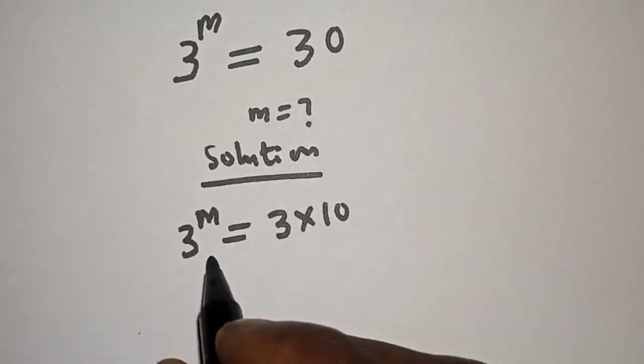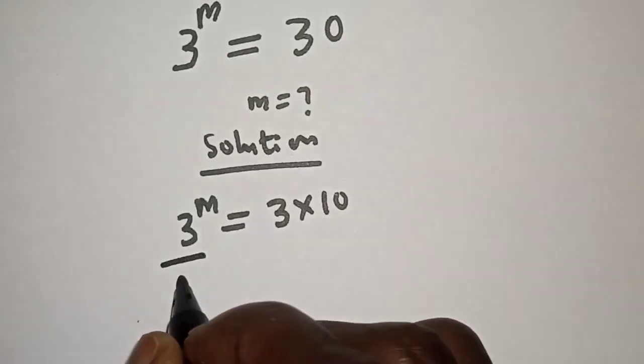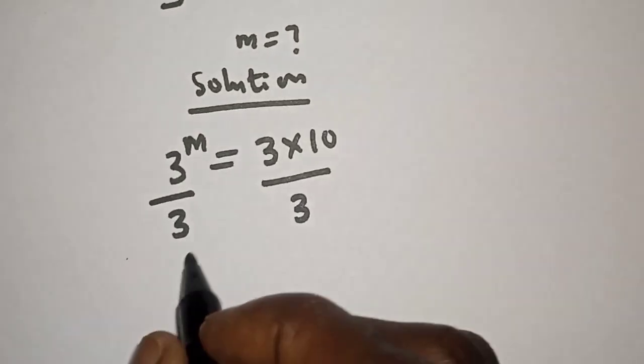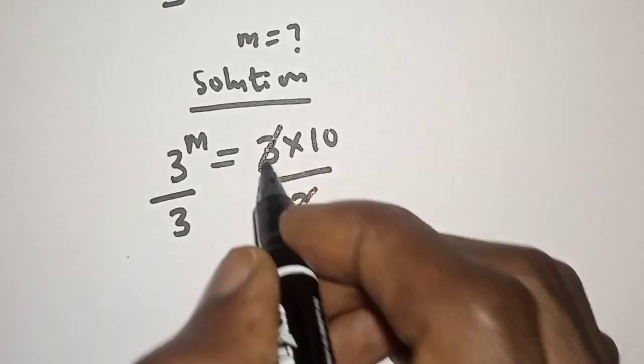Then let's divide both sides by 3, divided by 3, divided by 3. So this one will cancel this.